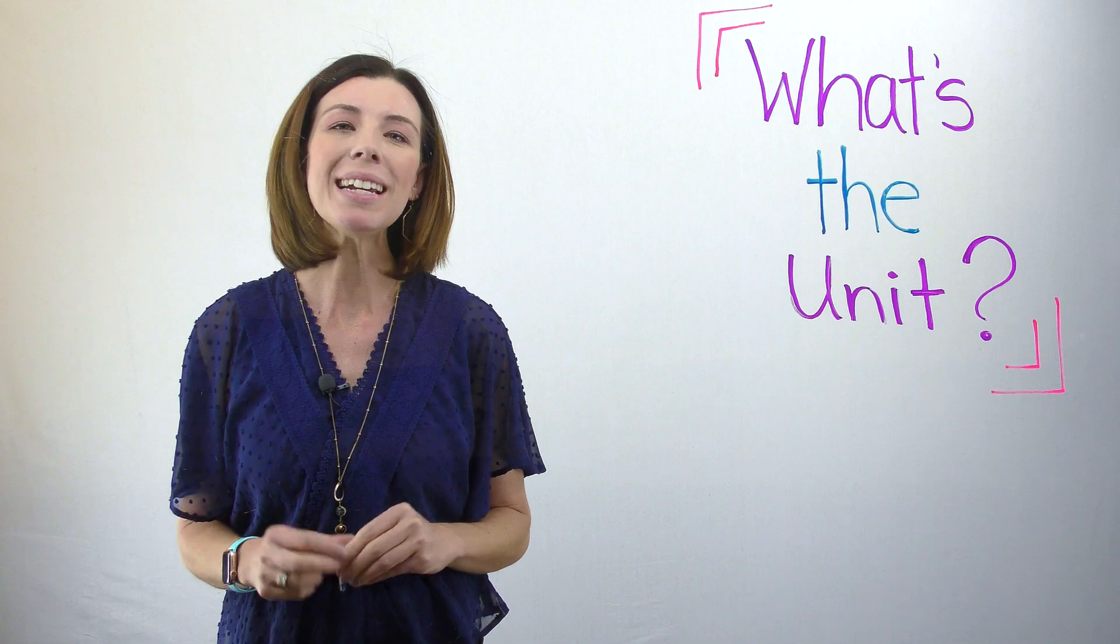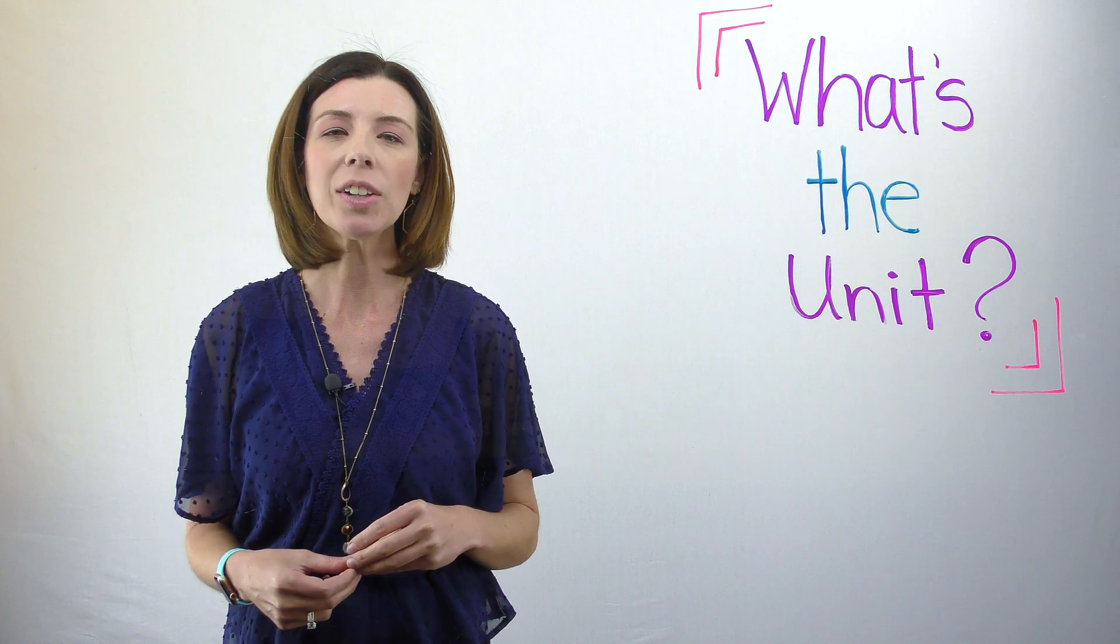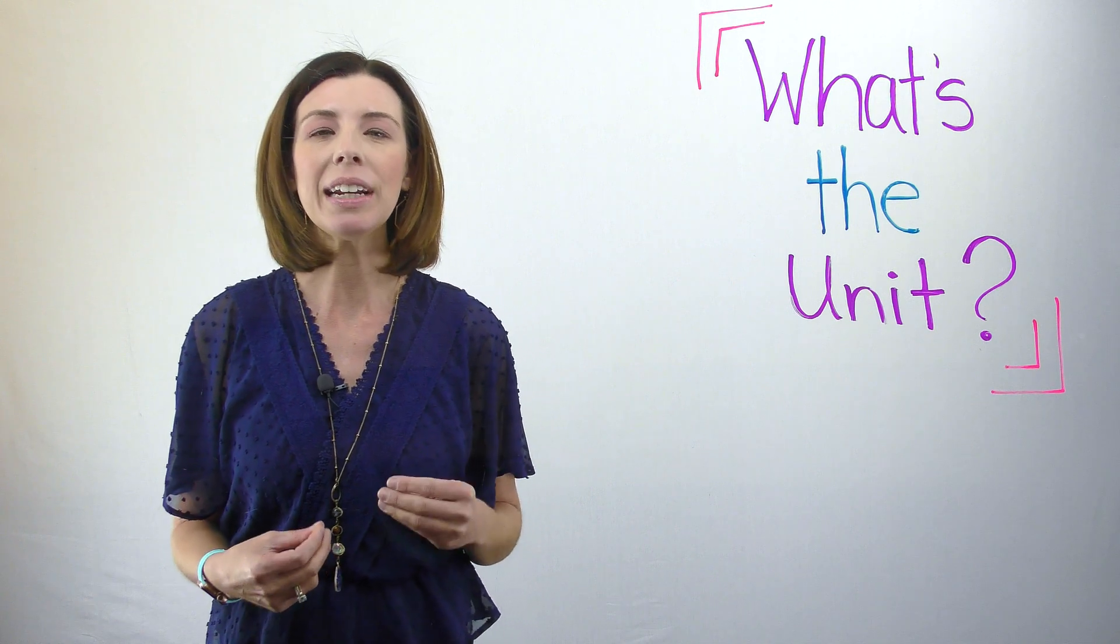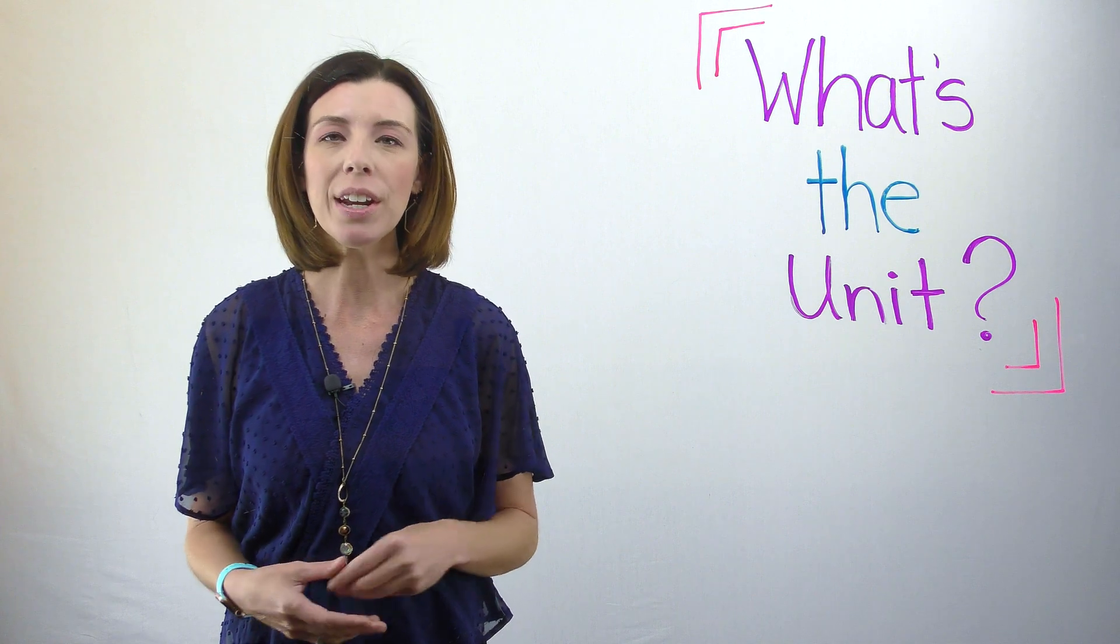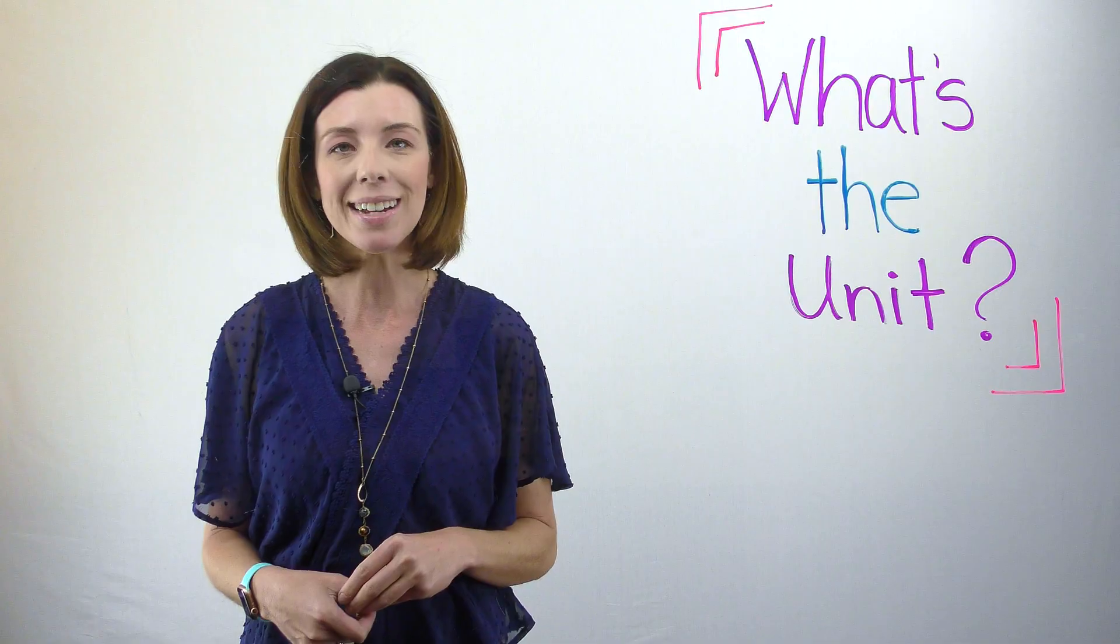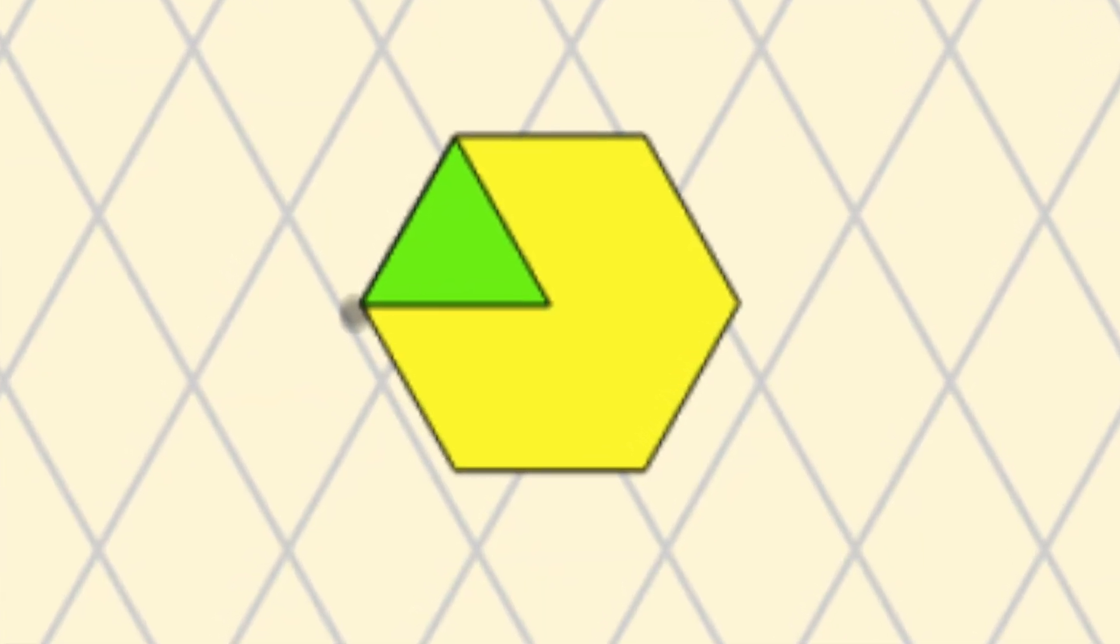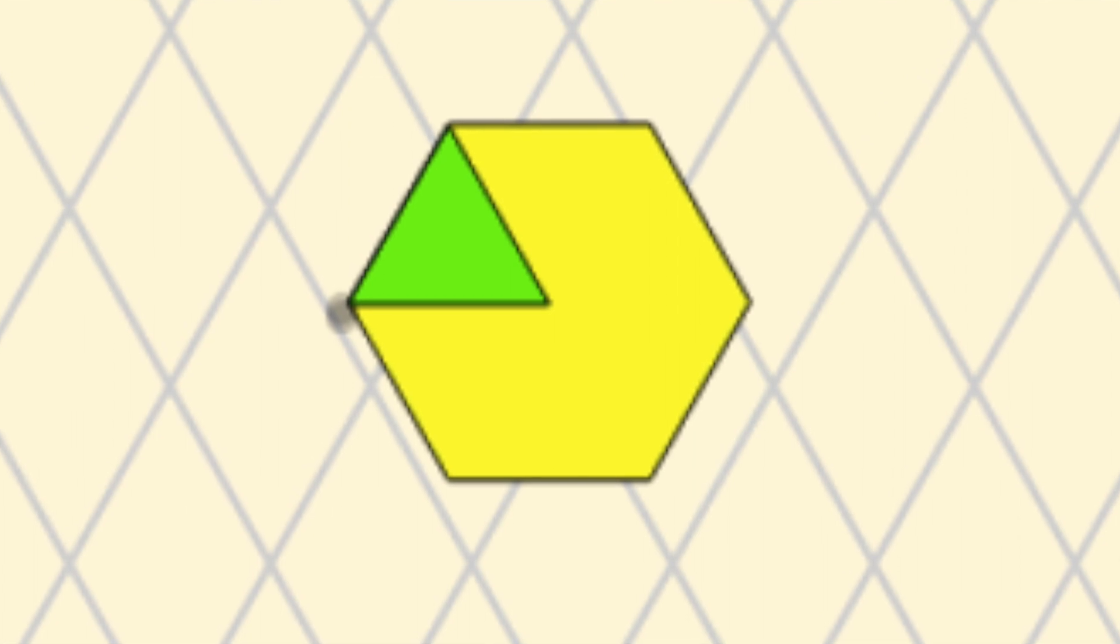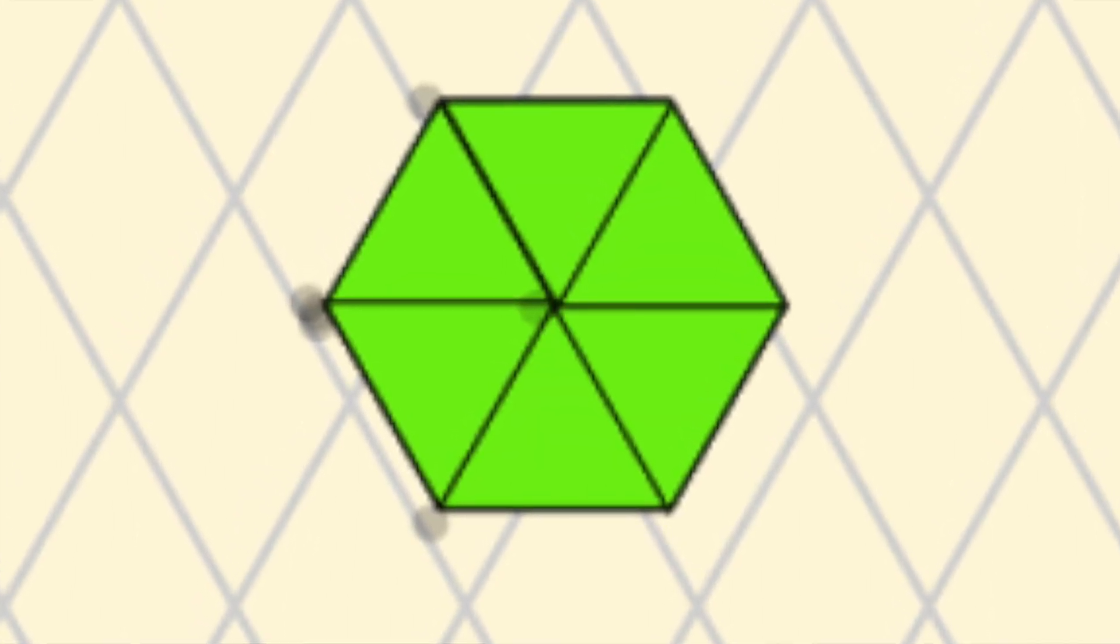So I'm going to start with the basic yellow hexagon and I want to see what part of the yellow hexagon is the green equilateral triangle. Again, we could say what fraction of the yellow hexagon does the green equilateral triangle represent. You can see that I can fill up this yellow hexagon with green equilateral triangles and I see that there are six green equilateral triangles that make up the entire hexagon.